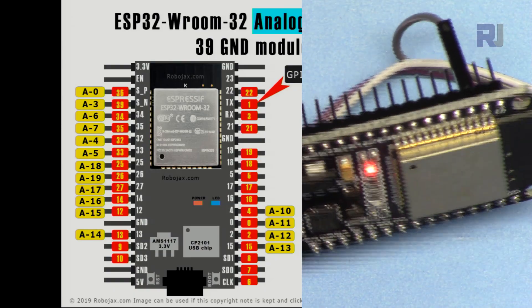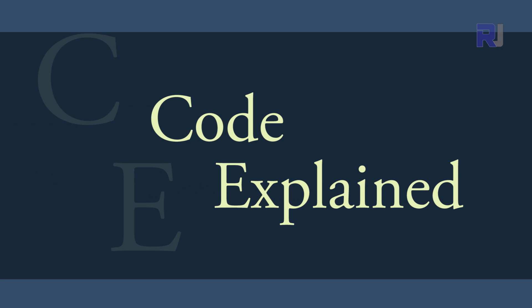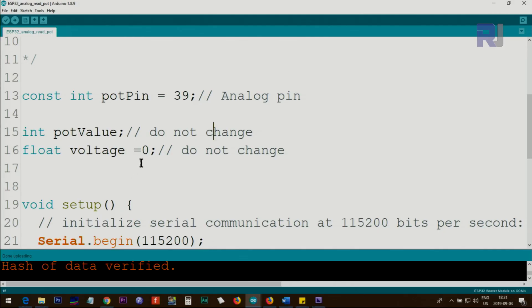Let me now explain the code from the top. We are defining a pot pin or potentiometer pin of type integer and we set it as constant so it cannot change during the execution of the code. We assign pin 39 meaning that we are reading pin 39 voltage. The integer potValue is the value for the potentiometer which will be used internally in the code. Then we have a float type variable we call voltage.